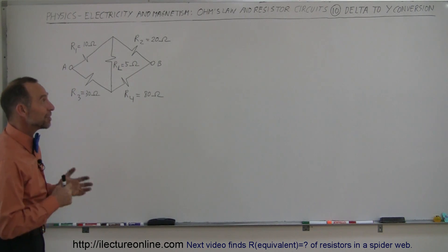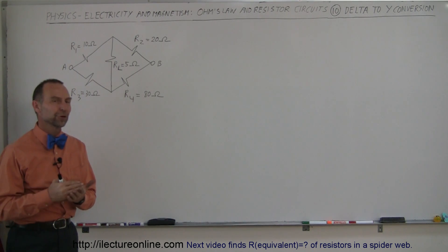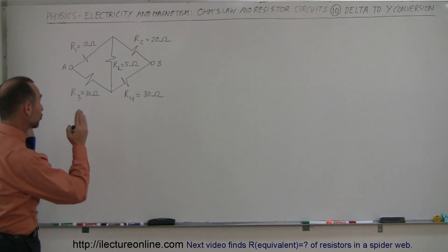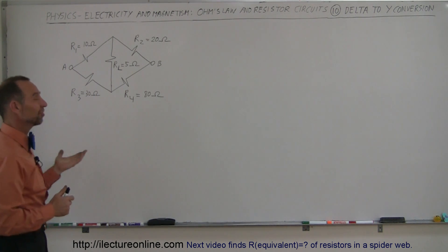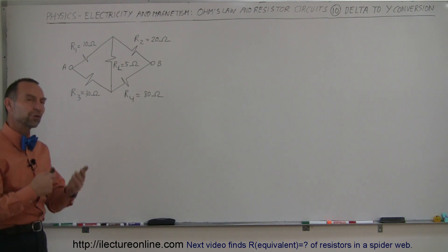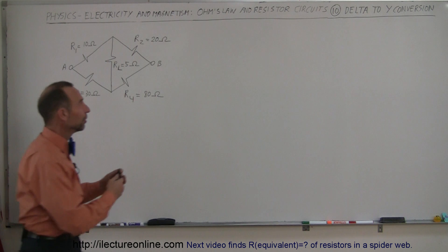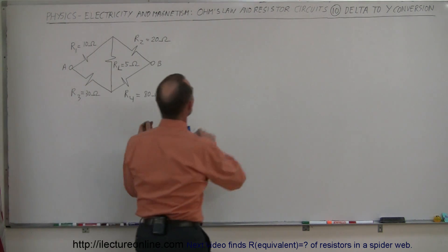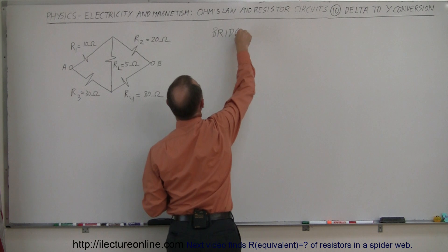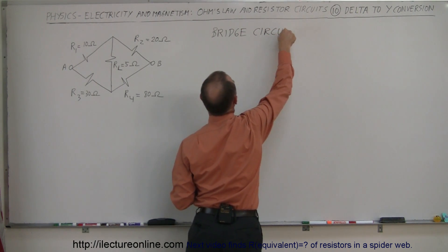Now we're going to learn something really interesting called the delta-to-Y conversion. It's a special technique to take care of a circuit that looks just like that. This is actually known as a bridge circuit, and later on I'll show you some more examples of what bridge circuits are and how to use them. But for now we're just going to learn this special technique.